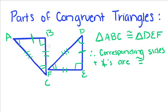We're going to talk about parts of congruent triangles. We have triangle ABC and we're told that it's congruent to triangle DEF. The way you name your triangles is important because if these two are congruent,